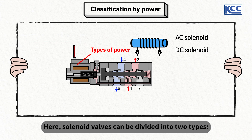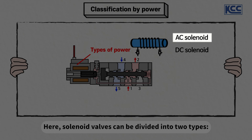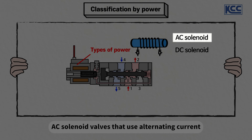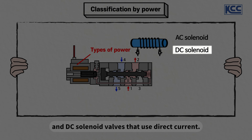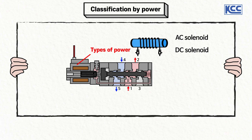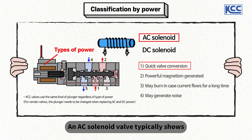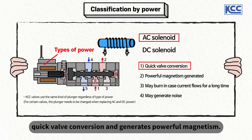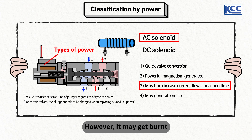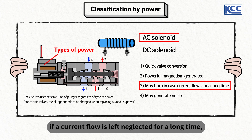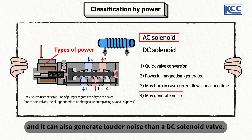Solenoid valves can be divided into two types: AC solenoid valves that use alternating current and DC solenoid valves that use direct current. An AC solenoid valve typically shows quick valve conversions and generates powerful magnetism. However, it may get burnt if current flow is left neglected for a long time, and it can also generate louder noise than a DC solenoid valve.